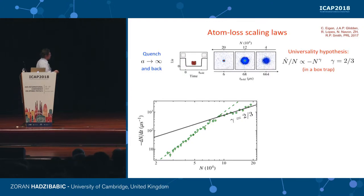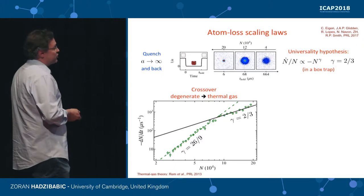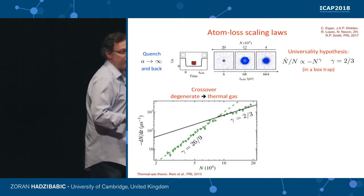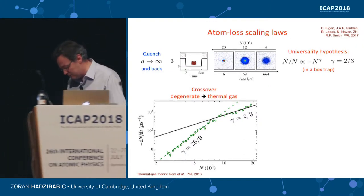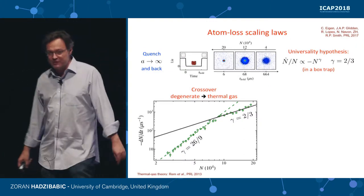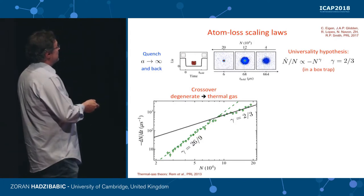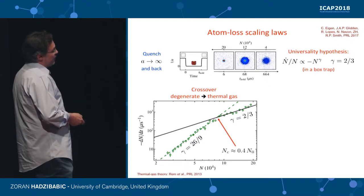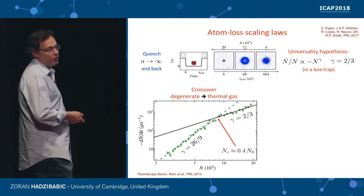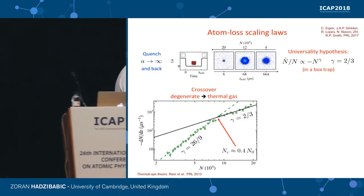This stops holding at some point, essentially because the gas has heated up. But it still looks like a power law, and one that you can also analytically predict: gamma equals 26 over 9 — not a number you see a lot in physics, but it was derived theoretically so it should be true. What we see is a crossover from a degenerate to a thermal gas, and in this example it happens when the atom number drops to about 40% of its initial value, meaning we have lost about 60% of the particles.